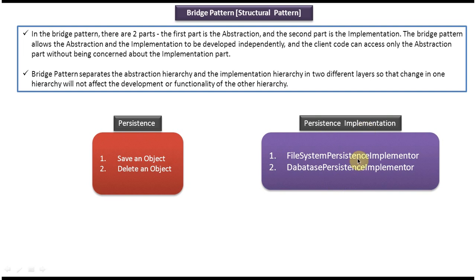I can use two implementers. The first one is the file system persistent implementer, which is used to save an object in the file system. The second one is the database persistent implementer, which is used to save an object in the database. I can use one of these implementers to save an object in the persistence.